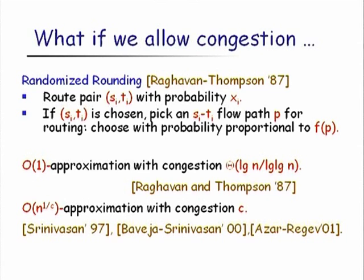Building on the same ideas, it was subsequently shown that for any constant congestion C, one can get an N^(1/C) approximation with congestion C for EDP. So things do improve as congestion is allowed, but notice that for constant congestion C, the approximation factor is still polynomial in N.